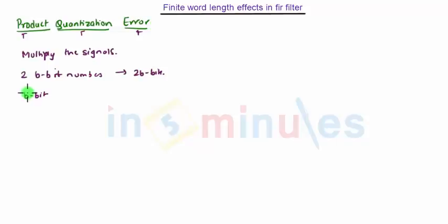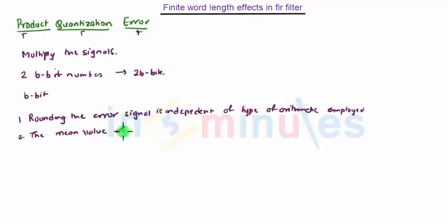Now why only rounding is preferred? The reasons are: first, rounding the error signal is independent of type of arithmetic employed. The mean value of error signal due to rounding is zero. And the variance of error signal is least when rounding is used.